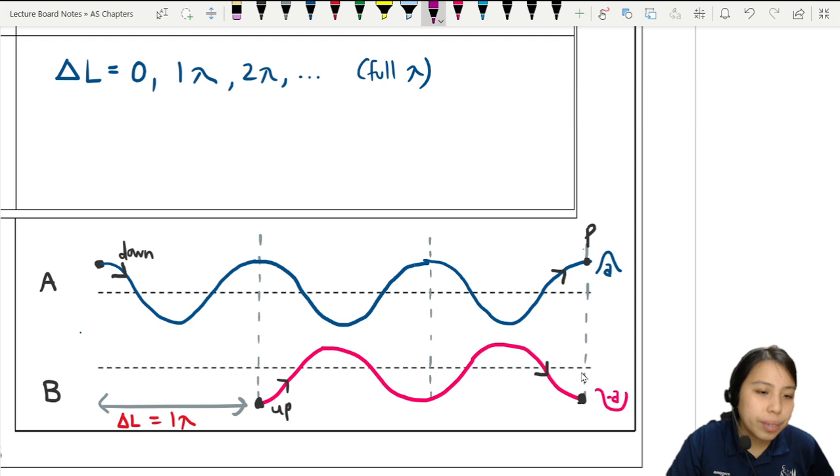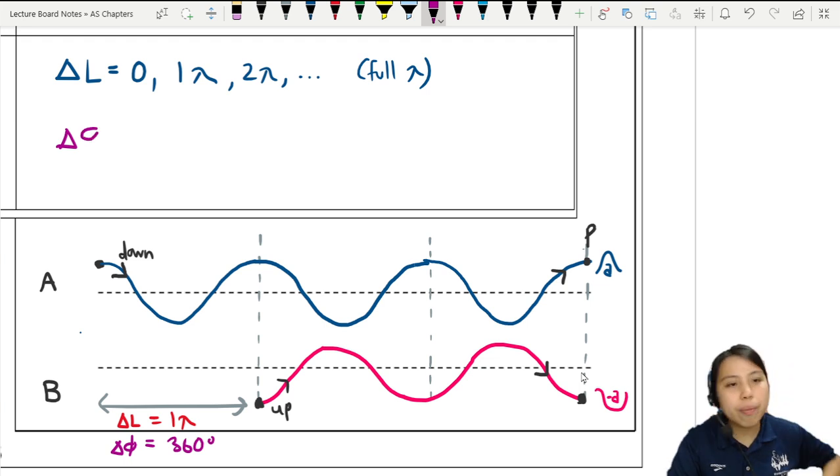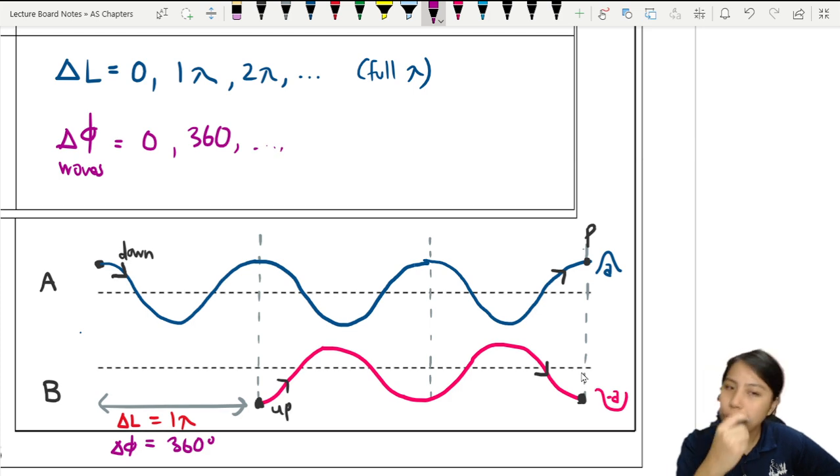For phase difference, the corresponding phase difference for this will be full cycle. So, 360 degrees. But wait! Same like just now. This is the phase difference of the waves. So, normally, you will say, oh, it's 0, 360, and so on and so forth.